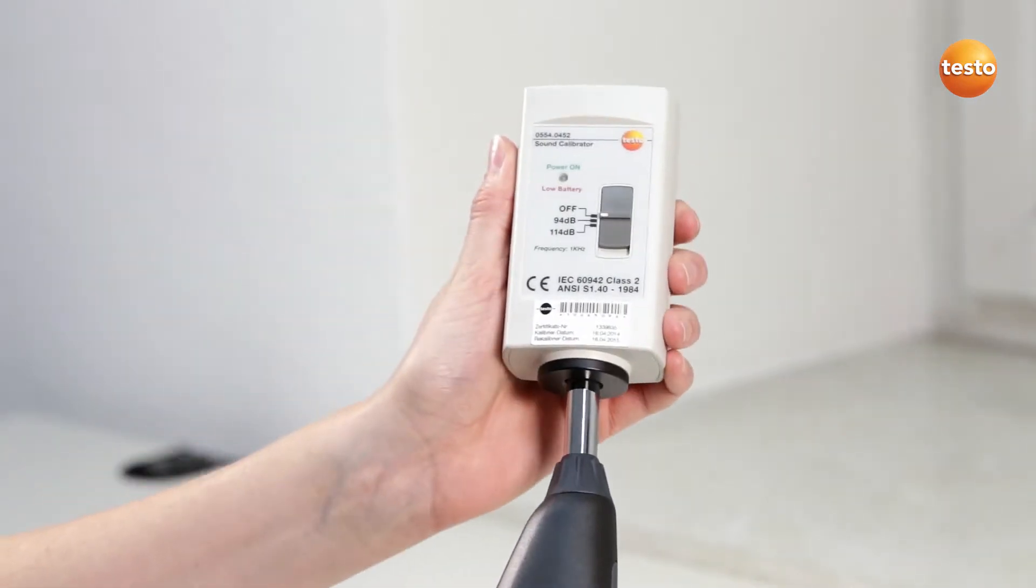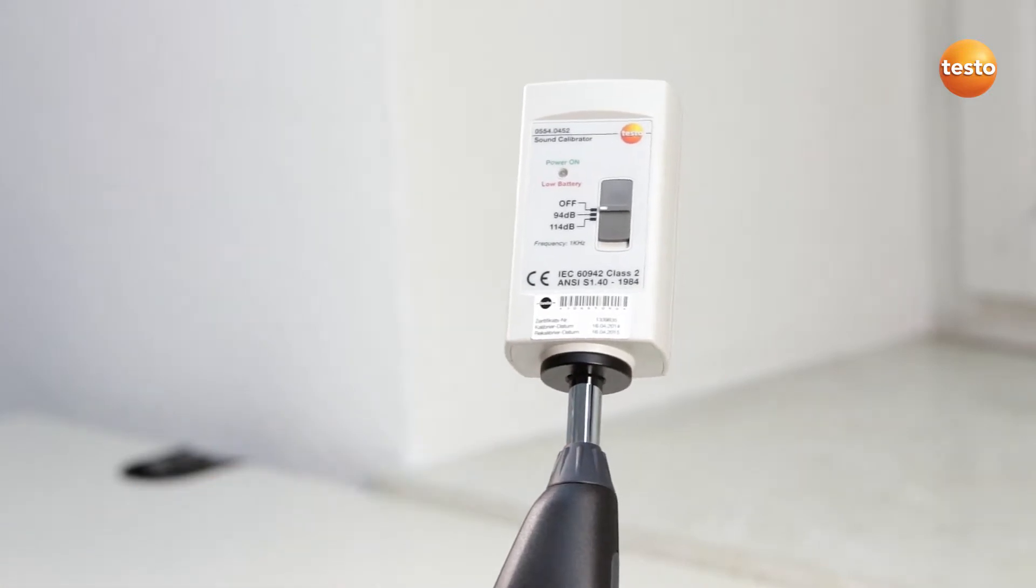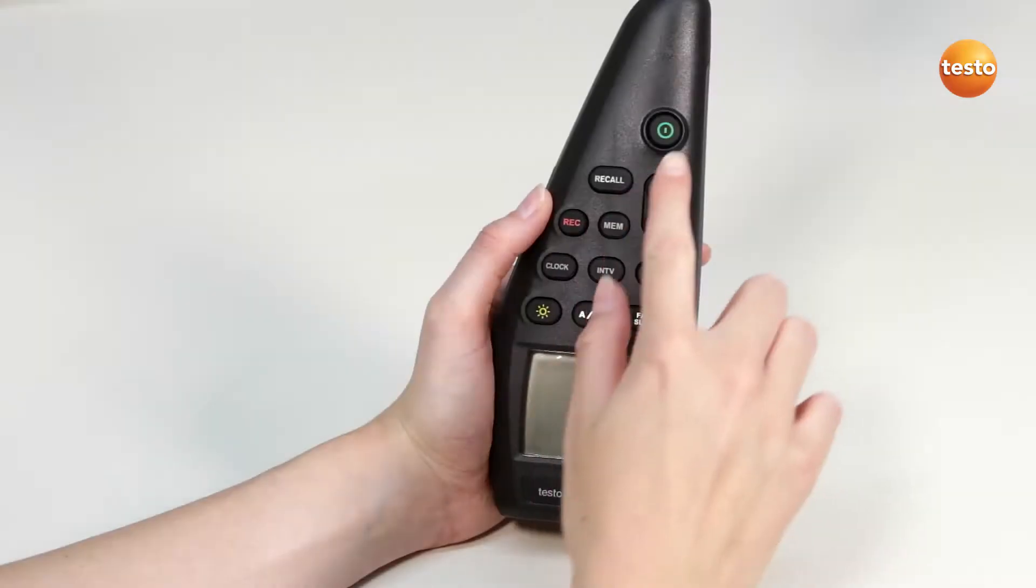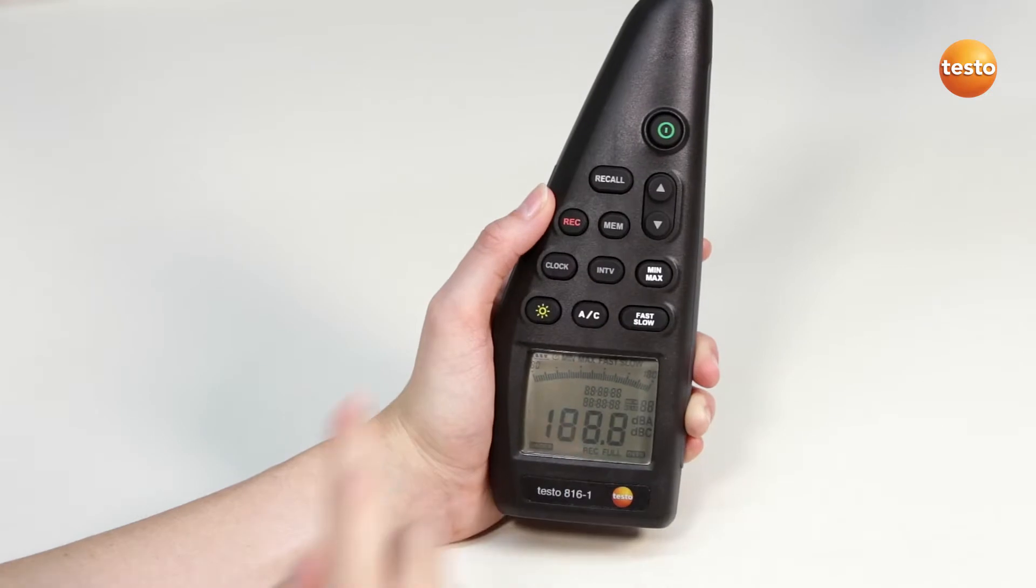In order to calibrate the sound level measuring instrument Testo 816-1, the calibrator is first fitted to the measuring instrument. The sound level measuring instrument can now be switched on.